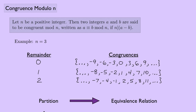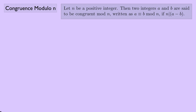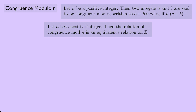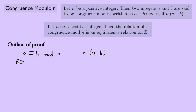So let's figure out what the equivalence relation is. Here's my claim: let n be a positive integer. Then the relation of congruence mod n is an equivalence relation on ℤ. Let's try to prove that. To show something is an equivalence relation, we need to show three things: reflexive, symmetric, and transitive. We're trying to show that a ≡ b (mod n) is an equivalence relation, and we know that's equivalent to n dividing a minus b.